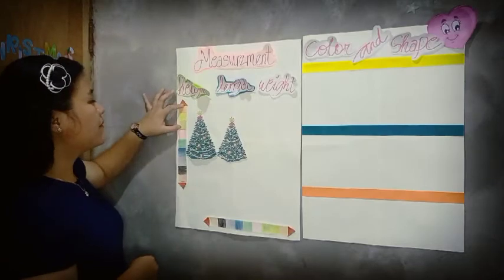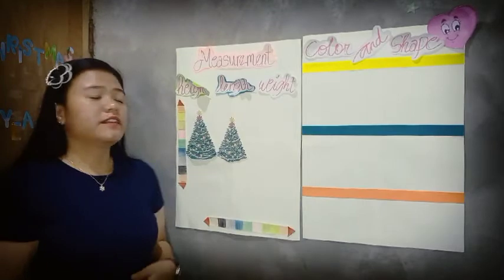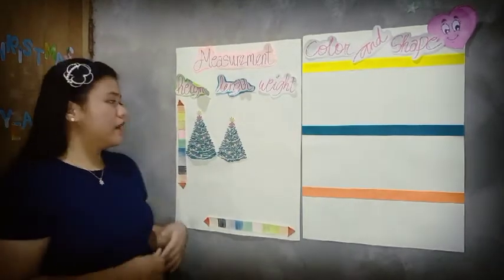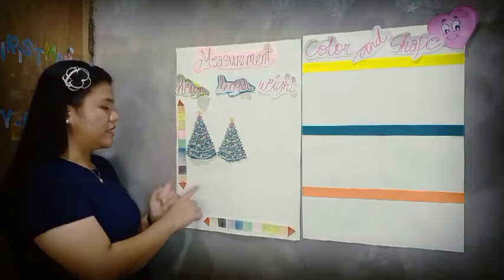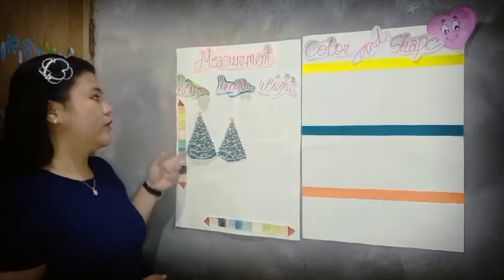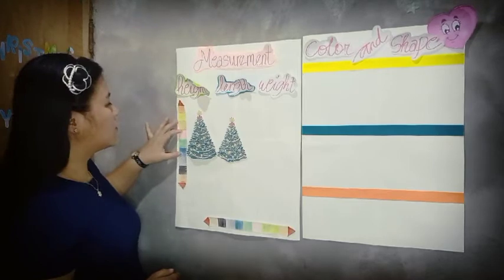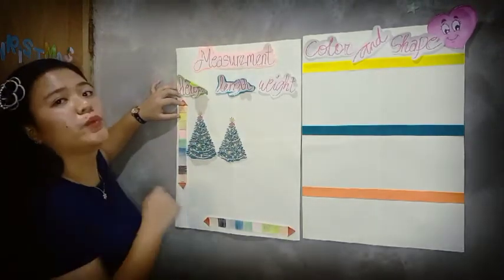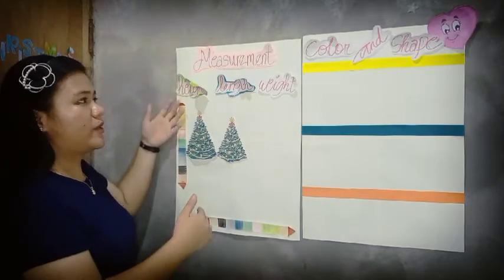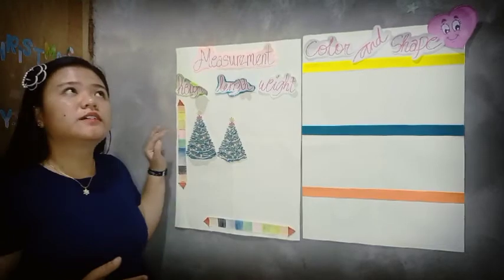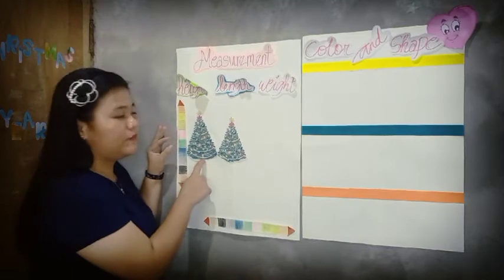Using our magic ruler, which has different colors, we will use it to measure the height of the object. The blocks of different colors are stacked on top of each other. These stacked blocks are our ruler to measure the height of the object.